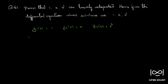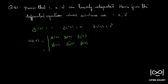To check whether these functions are linearly independent, we will first write down the Wronskian: y1(x), y2(x), y3(x) in the first row; y1'(x), y2'(x), y3'(x) in the second row; y1''(x), y2''(x), y3''(x) in the third row.